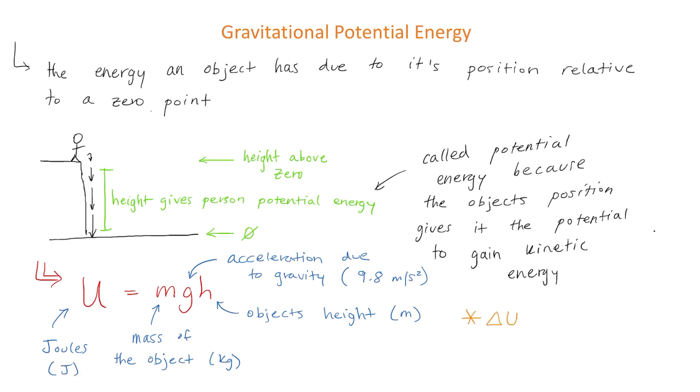And one last note is that if you need to solve for the change in gravitational potential energy you can use this equation which says that the change in potential energy is equal to the final potential energy minus the initial potential energy.